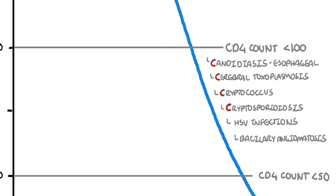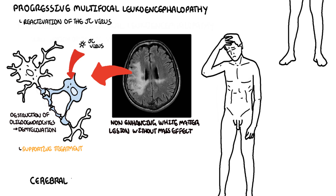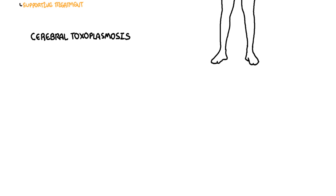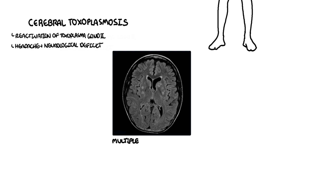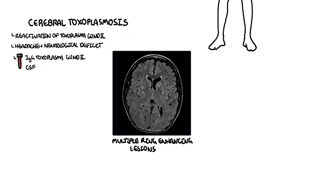Let's talk about AIDS defining conditions with a CD4 cell count less than 100. The first is cerebral toxoplasmosis, caused by reactivation of the parasite Toxoplasma gondii. Symptoms can include headache and focal neurological deficits. MRI shows multiple contrast-enhancing lesions. It is the most common cause of cerebral abscess in HIV patients. Investigations include serology positive for IgG against Toxoplasma gondii, or PCR positive in the cerebrospinal fluid.